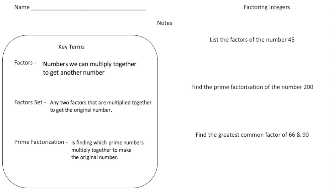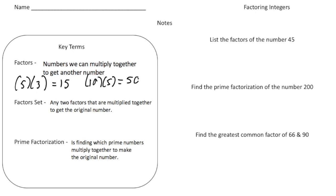So just what exactly are factors? Factors are numbers we can multiply together to get another number. For example, 5 and 3 multiplied together give us 15. Another example: 10 and 5 multiplied together give us 50. So both 10 and 5 are factors. A factor set is any two numbers that are multiplied together to get the original number.